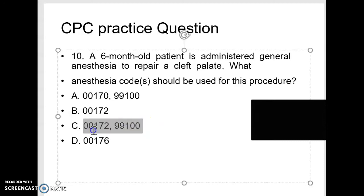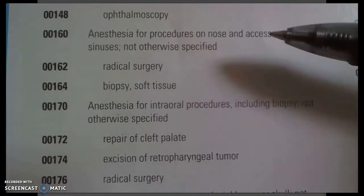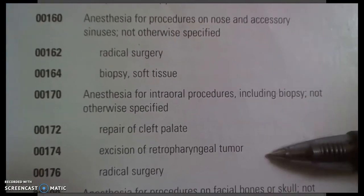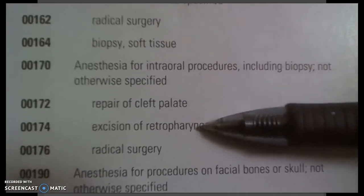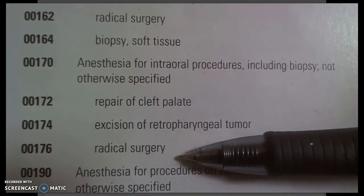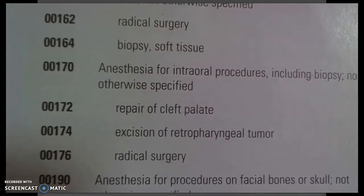On CPC exam questions you will be given choices. The code I'm choosing is 00172. You may also see 00170 and 00176 as choices. In the exam, look into every code and make sure which one is correct. We already discussed that 00170 is not the right code because we have a more specific one. And 00176 is for radical surgery — we are not going to choose any radical procedure code, as that would be a wrong answer.